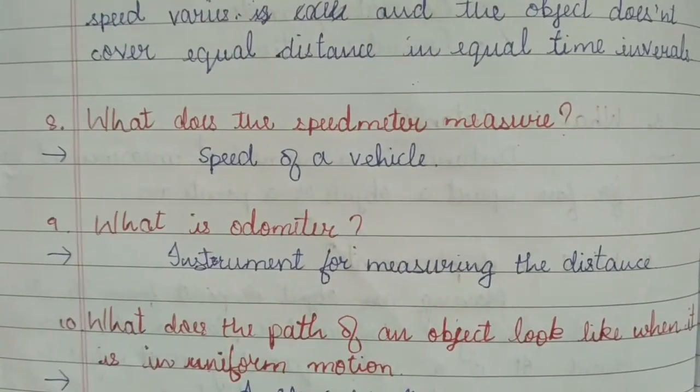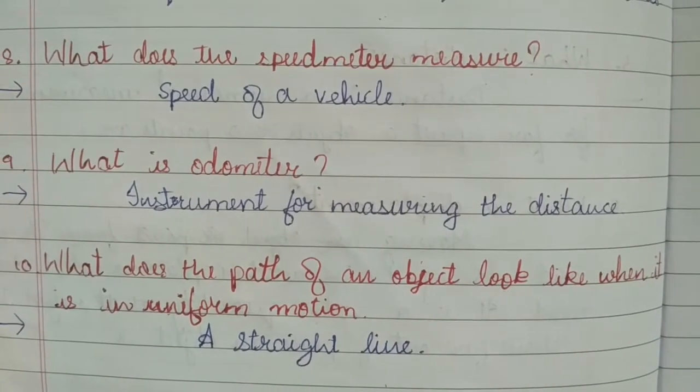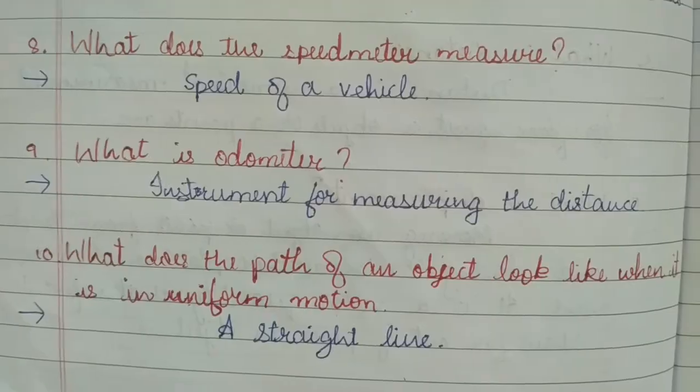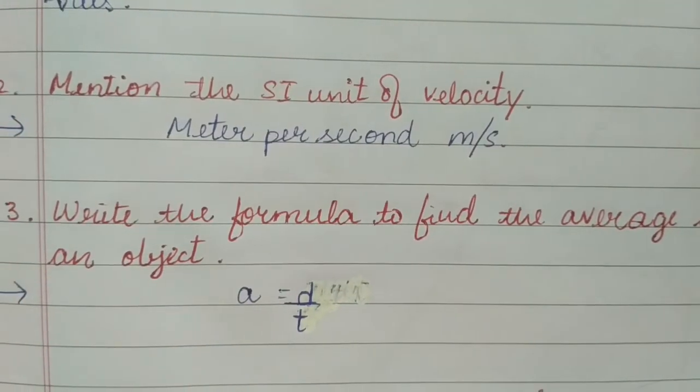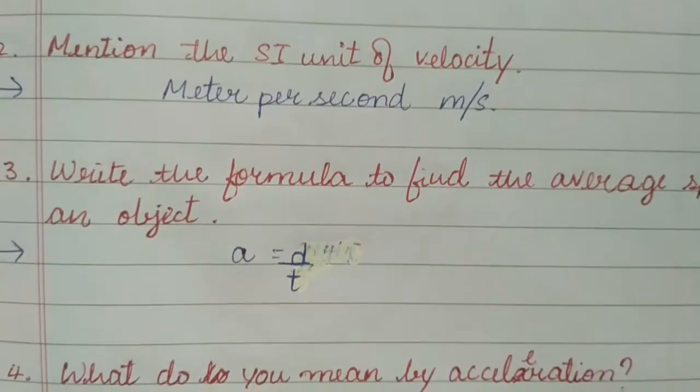What is odometer? Answer: instrument for measuring the distance. What does the path of an object look like when it is in uniform motion? Answer: a straight line. Mention the SI unit of velocity? Answer: meter per second.